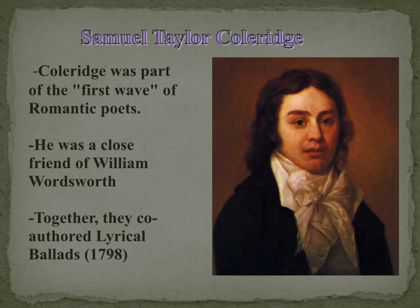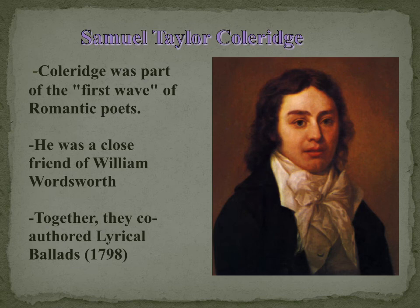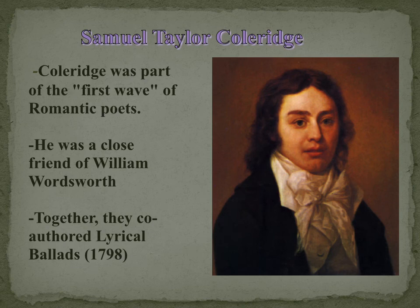Samuel Taylor Coleridge was born in Devonshire in 1772, the youngest of the many children of a self-made clergyman and schoolmaster. He was a fantastic dreamer, despised by other boys and unable to mingle with them. After the death of his father, he was sent to Christ's Hospital, the blue coat charity school in London, where he spent nine lonely years in a manner briefly described in an essay of Charles Lamb, where Coleridge appears under a thin disguise.